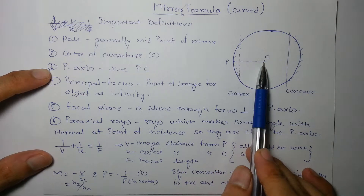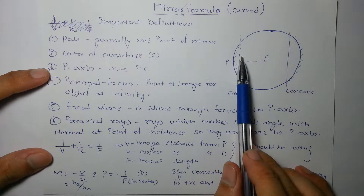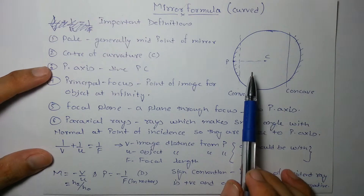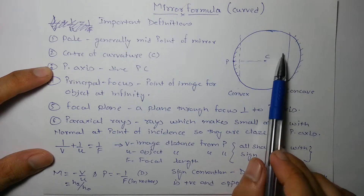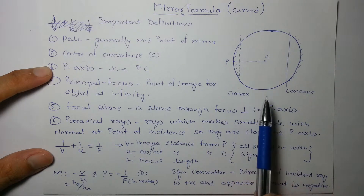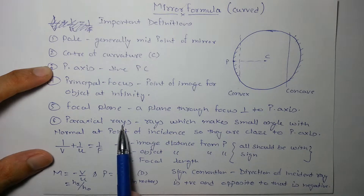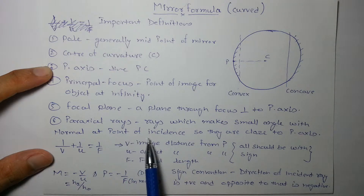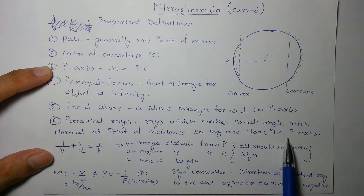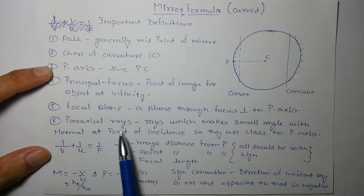Principal axis is the line joining the pole and center of curvature. Principal focus is the point where all rays converge or appear to converge — where the image is formed when the object is at infinity. Focal plane is a plane passing through focus perpendicular to the principal axis. Paraxial rays are rays which make a very small angle with the principal axis and with the normal at the point of incidence.